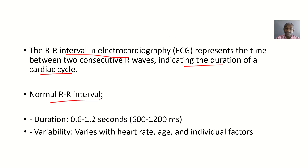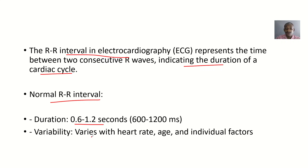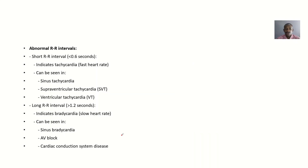Talking about the normal R-R interval — how would the normal one look like? For duration, it's about 0.6 to 1.2 seconds. For variability, it varies with heart rate, age, and individual factors.